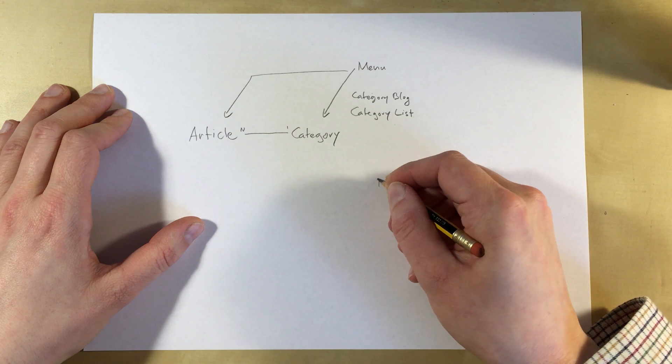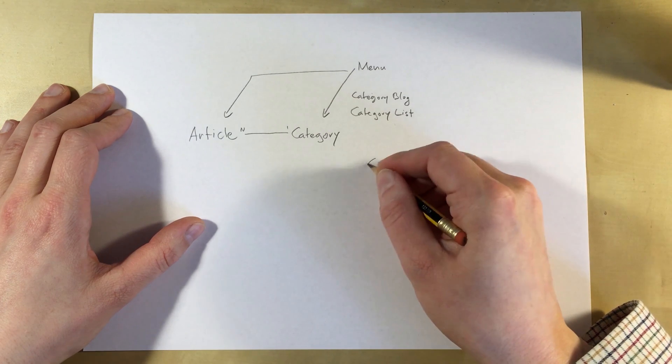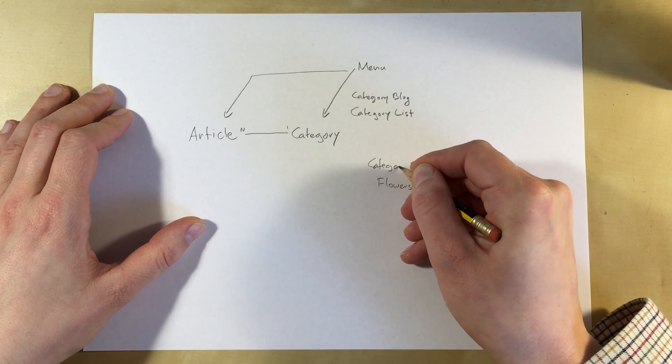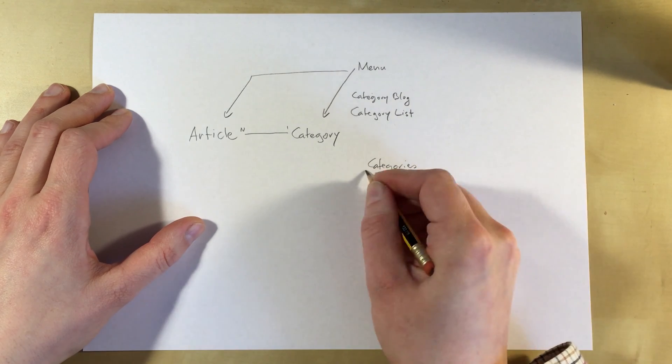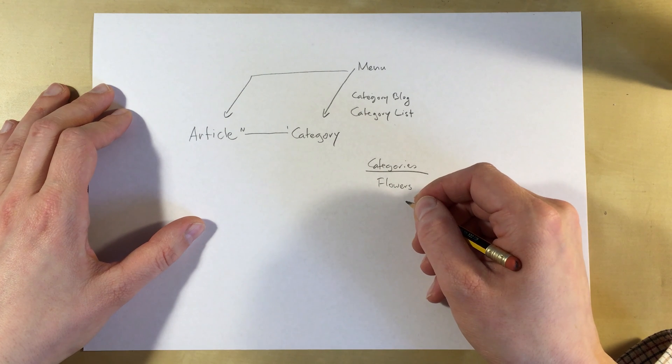For argument's sake, if our website is about gardening, then we could have one category for flowers. In our example, we've got flowers, and we could have...